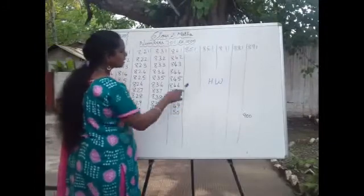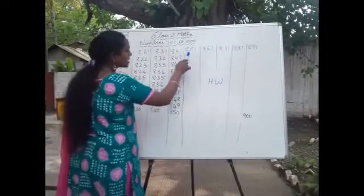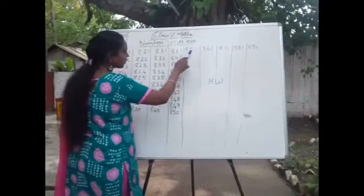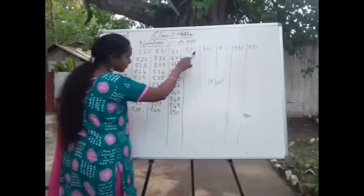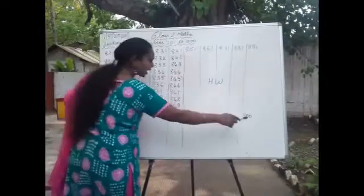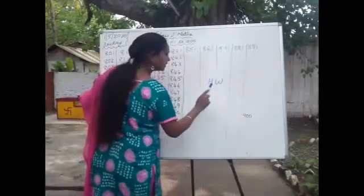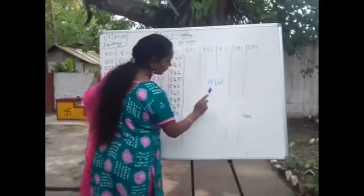After 850: 851. From 851 to 900, it will be a homework for you.